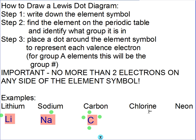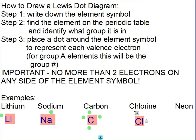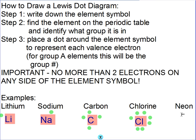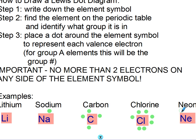Pause and do chlorine. Chlorine is capital C, lowercase l — not CI — it's Cl. You went to chlorine, it was in group seven, so you had seven electrons: one, two, three, four, five, six, seven. Notice I'm nicely paired around my symbol and then I have one empty spot. Pause and do neon. Neon is capital N, lowercase e, and we have eight: one, two, three, four, five, six, seven, eight. Nice and neat.